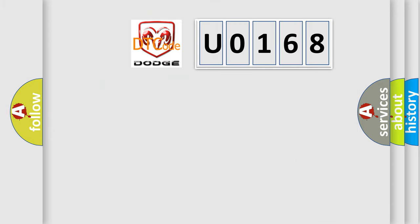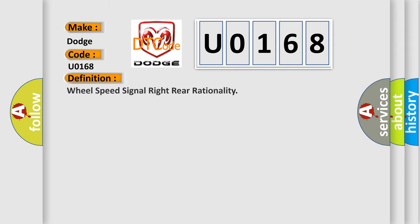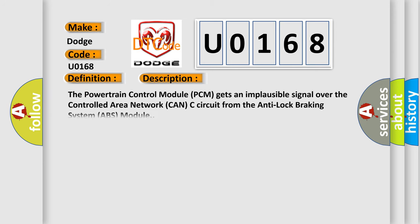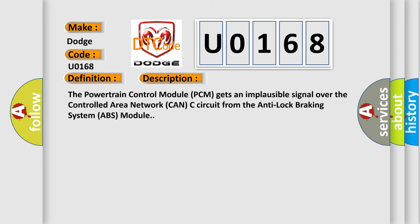So, what does the diagnostic trouble code U0168 interpret specifically for Dodge car manufacturers? The basic definition is: Wheel speed signal right rear rationality. Here is a short description of this DTC code: The powertrain control module (PCM) gets an implausible signal over the controlled area network CAN-C circuit from the anti-lock braking system (ABS) module.